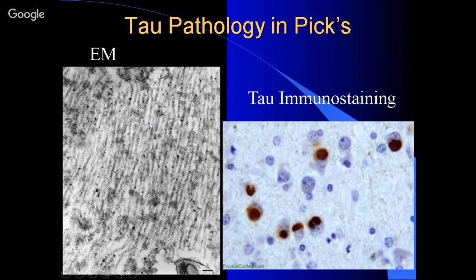Here's some EM showing fibrils accumulating. This is tau, and here you have tau immunostaining. Again, it looks like membrane-bound organelles, except you can see a fuzziness that doesn't look membrane-bound. In fact, they are not membrane-bound.